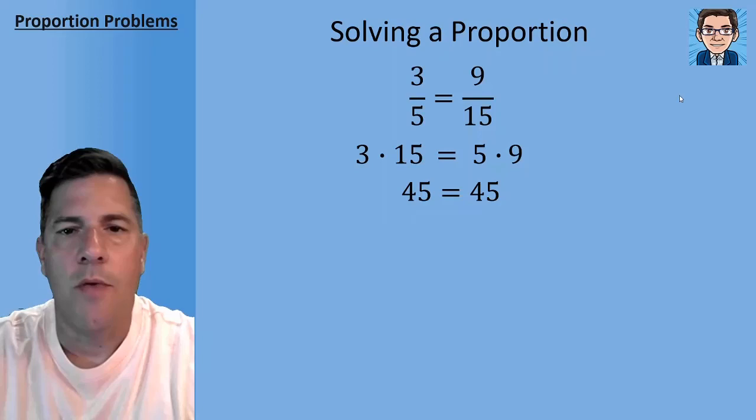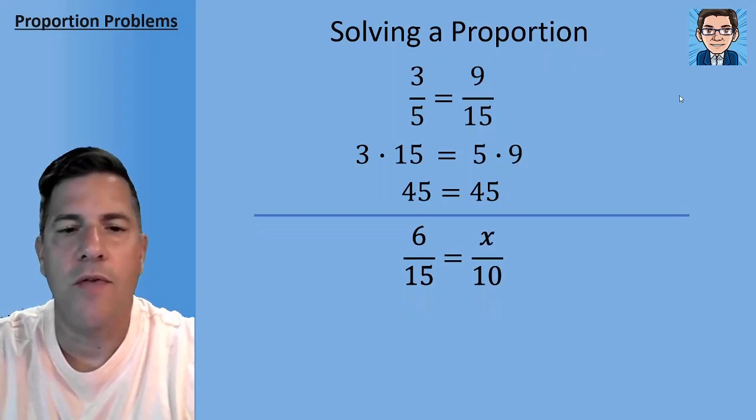We're essentially putting it over a common denominator and that's why this works. So the 3 times the 15 and the 9 times the 5, the two diagonals are always going to be equal when two fractions are set equal to each other.